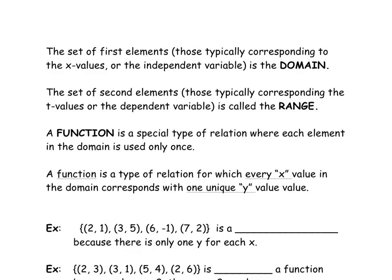As mentioned, the set of first elements in the mapping — that first bubble — corresponds to the x values. We also call that the independent variable on the x-axis, and we associate those values to the domain. The set of second elements corresponds to the y values, or the dependent variable on the y-axis. We associate those values to the range. So the possible y values are called the range, and the possible x values are called the domain.